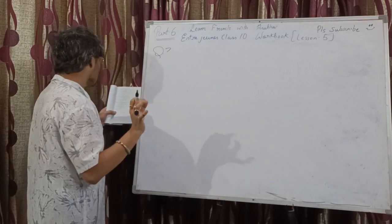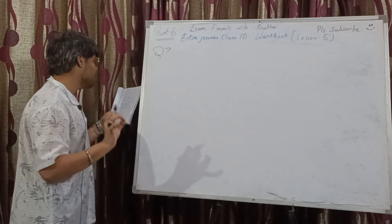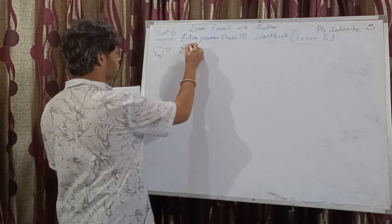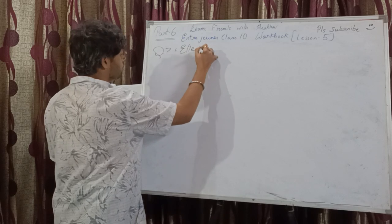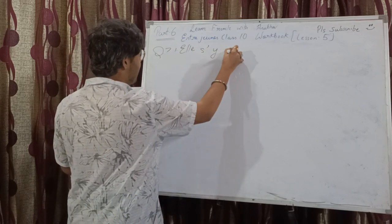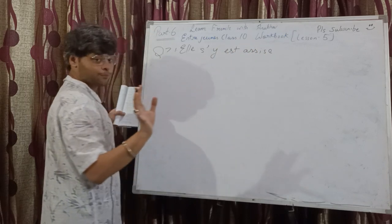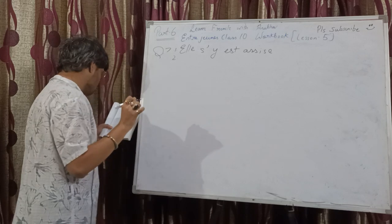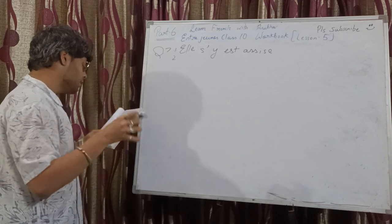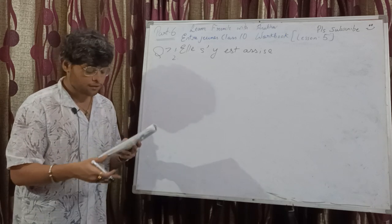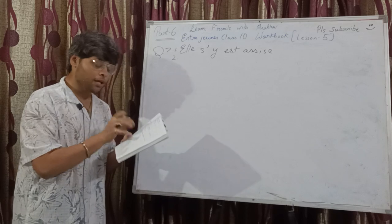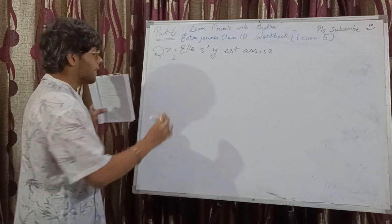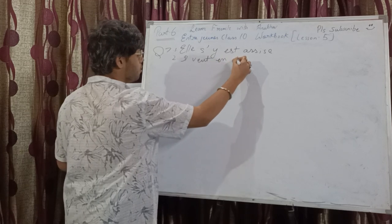First one: 'Elle s'assoit devant la cheminée.' Devant la cheminée is complément de lieu — replaced by Y. With a reflexive verb, the reflexive pronoun comes first: 'Elle s'y assoit.' Number two: 'Il va connaître des fonctionnaires.' Des fonctionnaires — EN will be used. It's futur proche — pronoun before main verb, not the helping verb. So: 'Il va en connaître.'